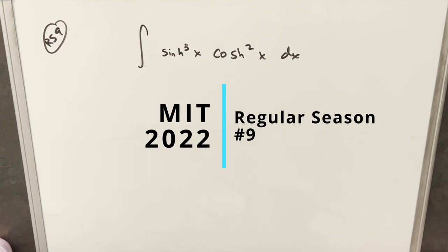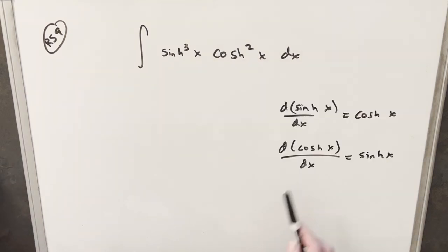I haven't done a problem with hyperbolic trig functions in a while, and so I think one important thing to note is the derivative of sinh x is cosh x, and the derivative of cosh x is sinh x. That's really useful, and of course from that you can get the integrals. If you integrate sinh you get cosh, if you integrate cosh you get sinh.